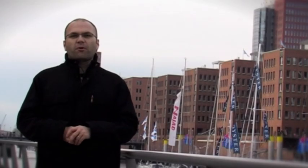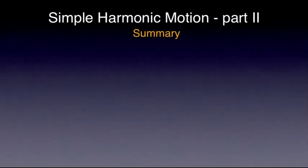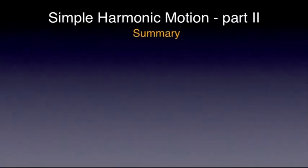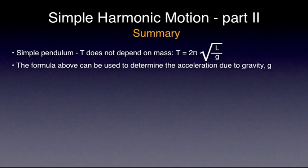It's now time to sum up the key points in today's podcast. In the case of a simple gravitational pendulum, its period, capital T, does not depend on the mass attached to the string. The period is given by the formula T equals 2π square root of L over G, where L is the length of the pendulum and G is the acceleration due to gravity. As you can see, M does not appear in the formula.